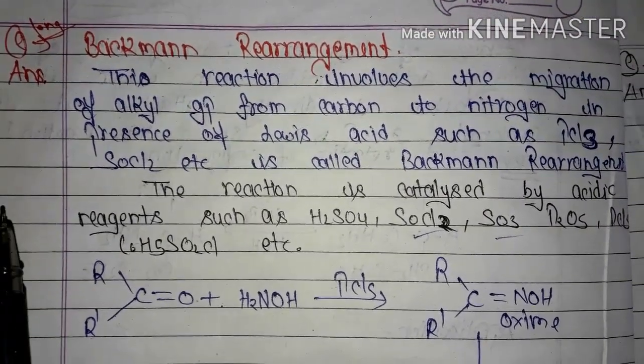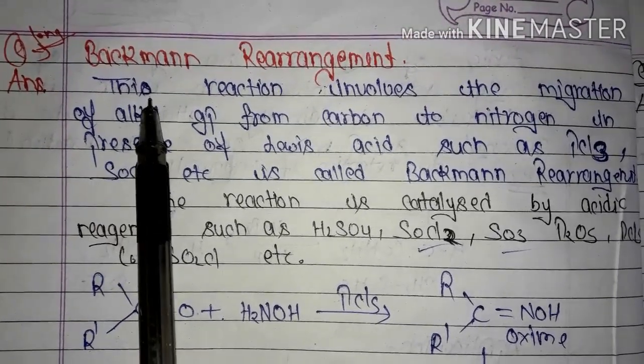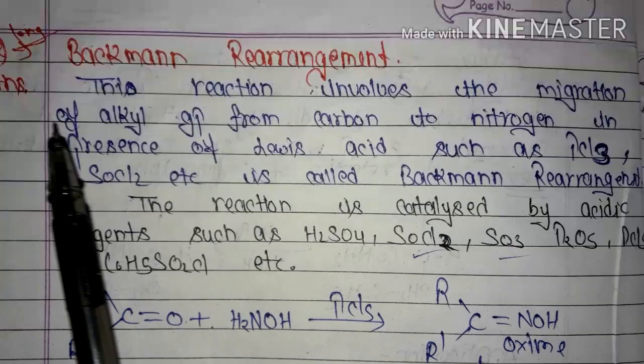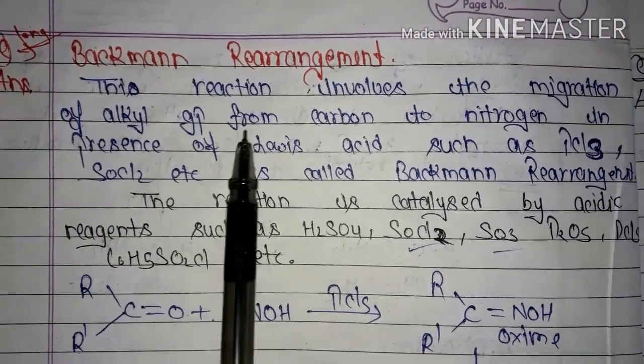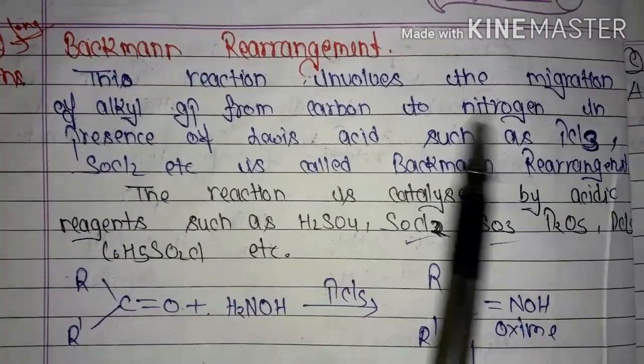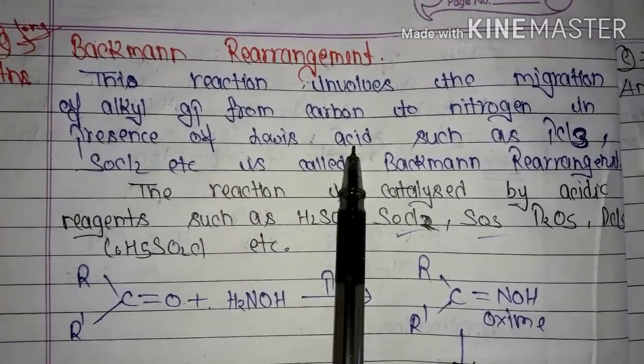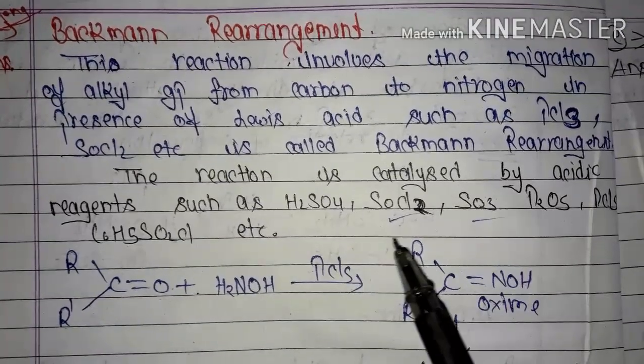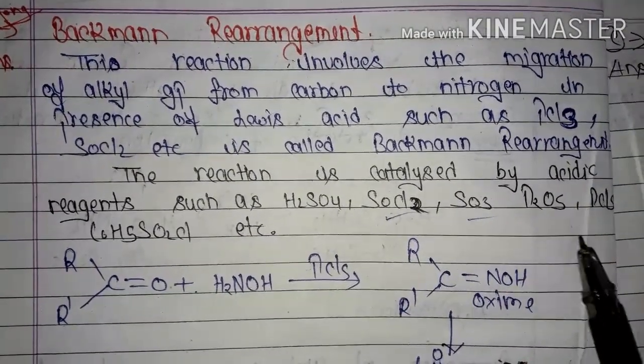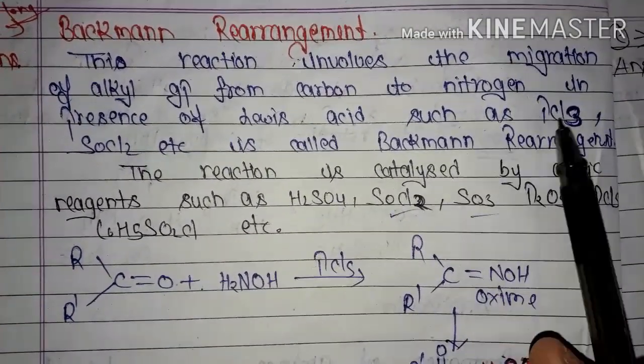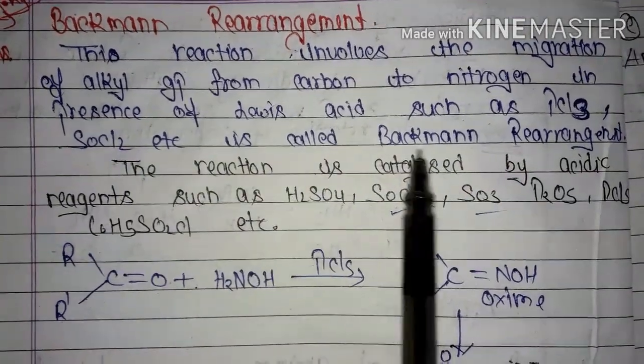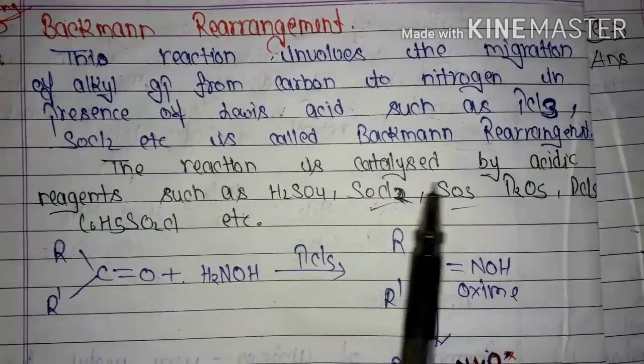Backman rearrangement: this reaction involves the migration of alkyl group from carbon to nitrogen in presence of Lewis acid. In Backman rearrangement, the alkyl group or carbon migrates to nitrogen in presence of Lewis acid, which can be PCl3, SOCl2, etc. This is called Backman rearrangement. Very simple.